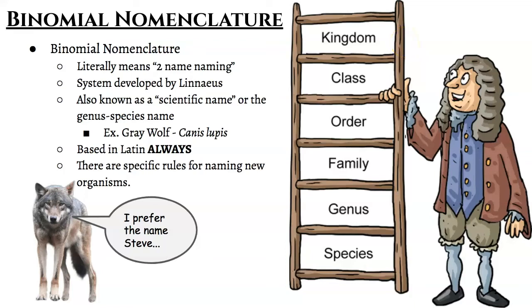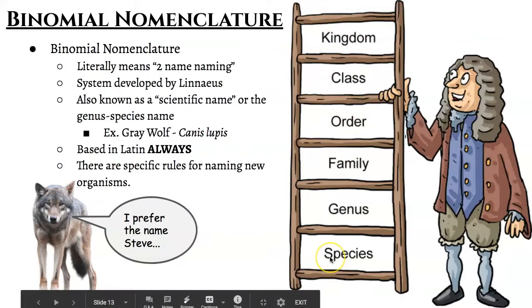Hey guys, good morning. Today we're going to be talking about several things in this video. First, I want to do a recap of what we started last week with binomial nomenclature and classification in general. Then I briefly want to talk about what you were reading yesterday about the problems with this classification system. After that, we're going to look at the different kingdoms of life — the kingdoms and the domains. Last but not least, I'm going to help you get started on your mini classification report, where you'll pick an organism and give me its entire classification from domain all the way down to species, telling me what's unique about each level.